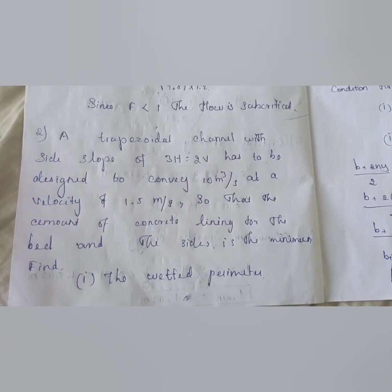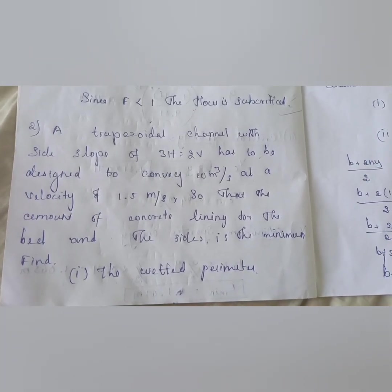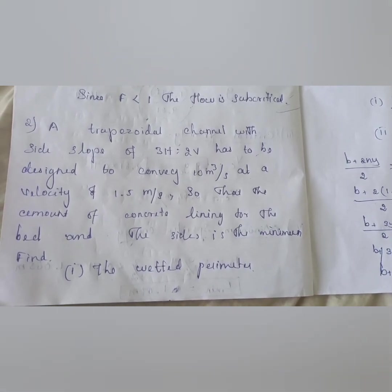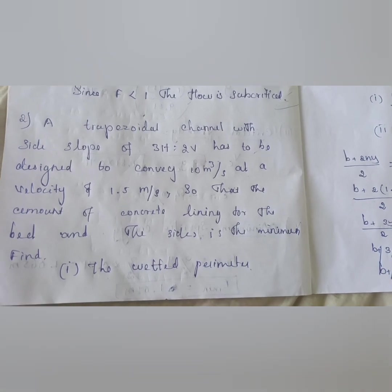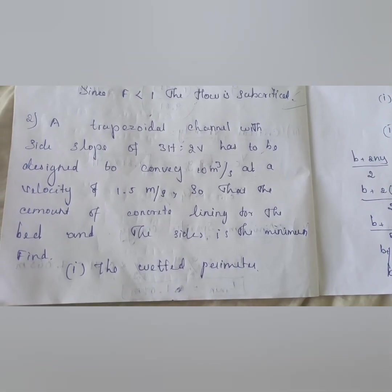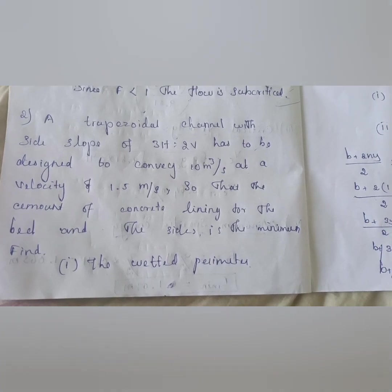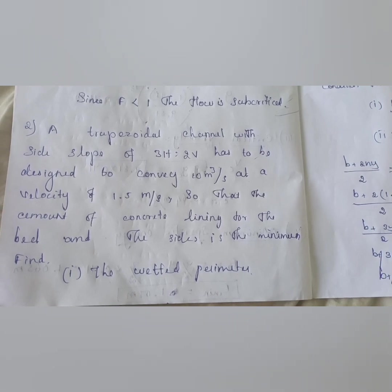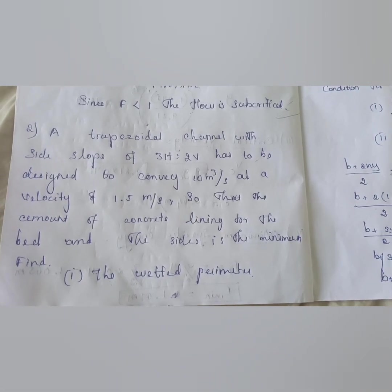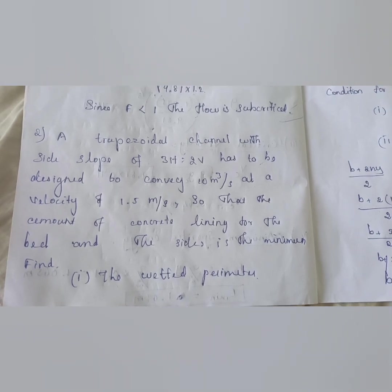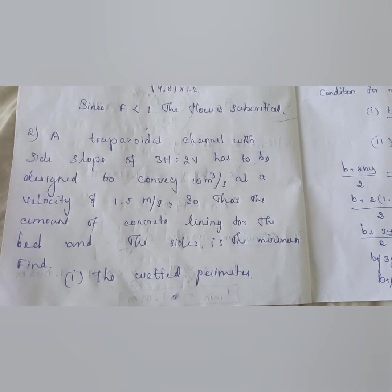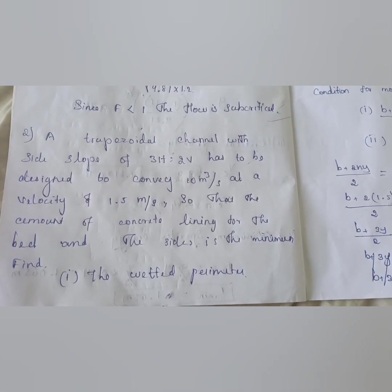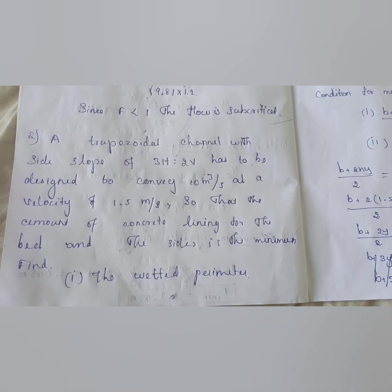Next, one important problem. A trapezoidal channel with side slope of 3 horizontal to 2 vertical has to be designed to convey a discharge of 10 cubic meters per second at a velocity of 1.5 meters per second, so that the amount of concrete lining for the bed and the sides is minimum. Here the breadth and depth are not given, so we have to apply the condition for most economical section.